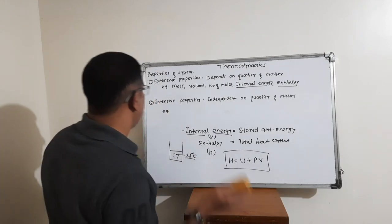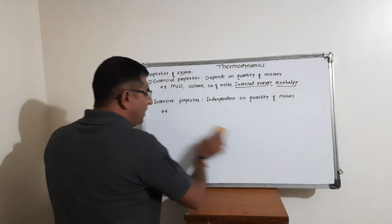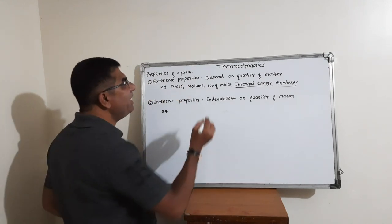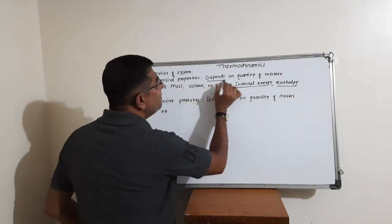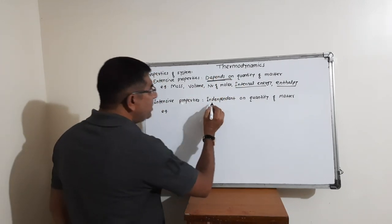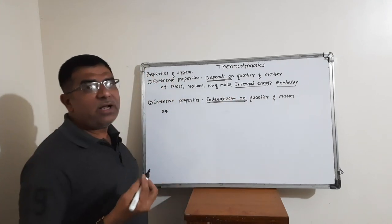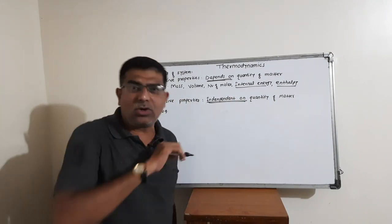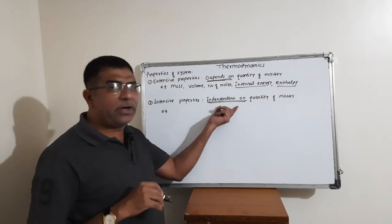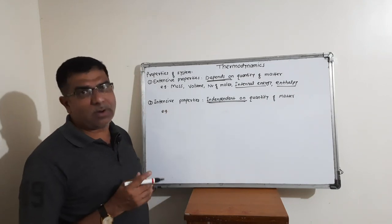Now, the second type is intensive properties. Extensive properties depend on quantity of matter. Intensive properties, on the other hand, are properties which do not depend on quantity of matter — they are independent of quantity of matter.